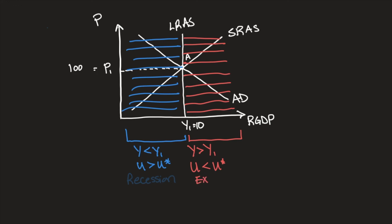Over the next several videos, we're going to talk about changes that could happen in the economy: what might cause those changes, what happens in the short run, and how the economy gets back to the long run. That is the beauty of the AS-AD model.